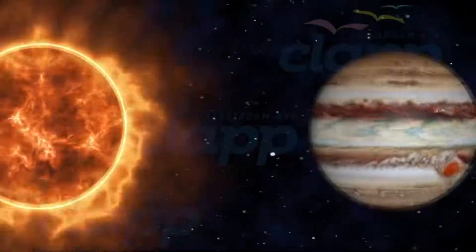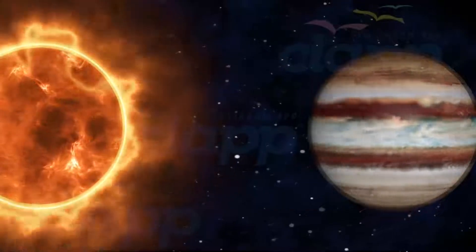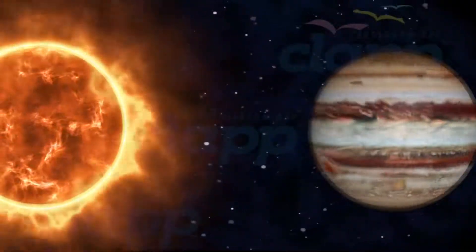Jupiter takes 9 hours and 55 minutes for one rotation on its own axis. It is the fastest among the planets.